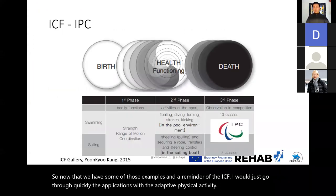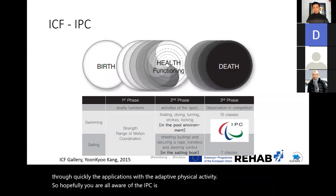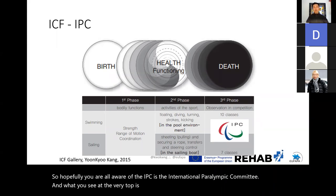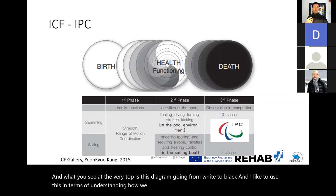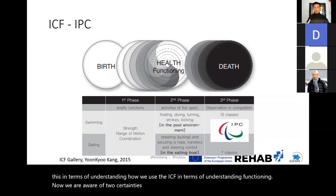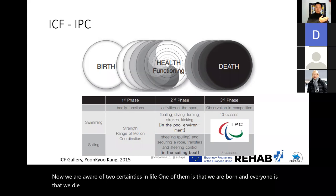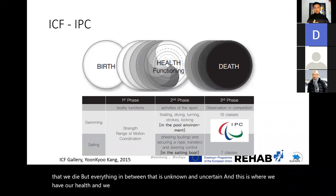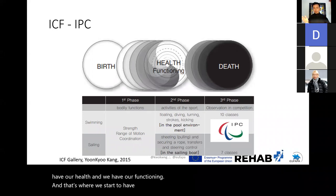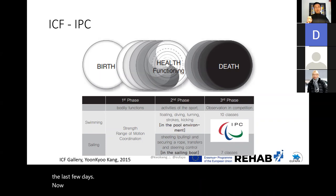Hopefully you are all aware of the IPC — the International Paralympic Committee. At the very top is a diagram going from white to black. I like to use this in terms of understanding how we use the ICF: we are aware of two certainties in life — we are born and we die — but everything in between is unknown and uncertain. This is where we have our health and functioning, the shades of gray getting darker towards the last few days. Keep that in mind when you look at Paralympic sports.